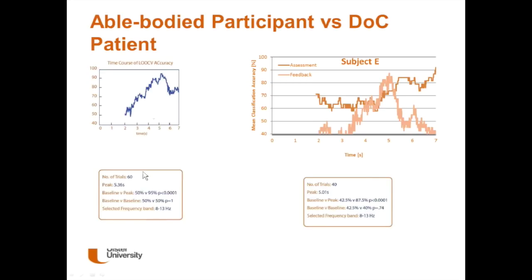With an able-bodied participant we can achieve up to 95% accuracy distinguishing left versus right, with a statistically significant difference between baseline and the imagery period. We were also able to show a clearly distinguishable response pattern in the first session with a participant who had been minimally conscious and unresponsive for over 12 years following a brain injury at age 17. This was quite exciting for the consultants involved because they had not detected any consciousness through standard assessments.